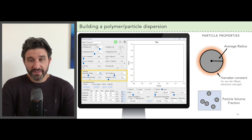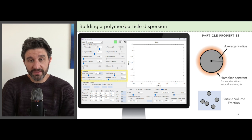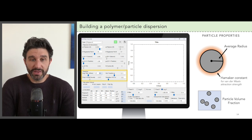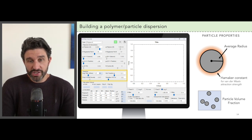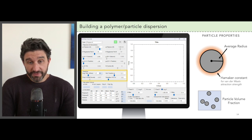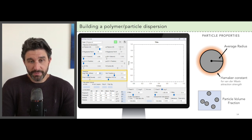You also specify in this section the Hamaker constant, which dictates the van der Waals attraction strength between the particles when they're unshielded by the polymers. And finally you can choose the volume fraction of the particles.